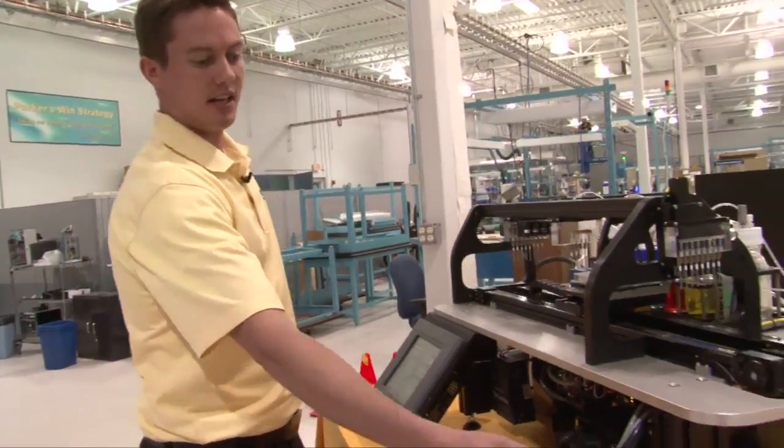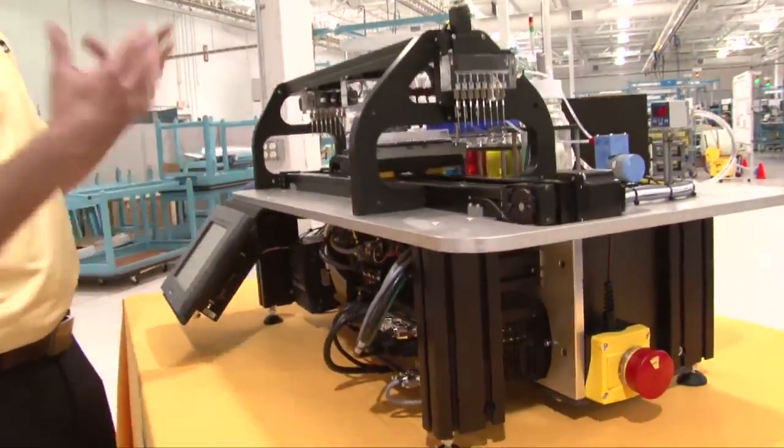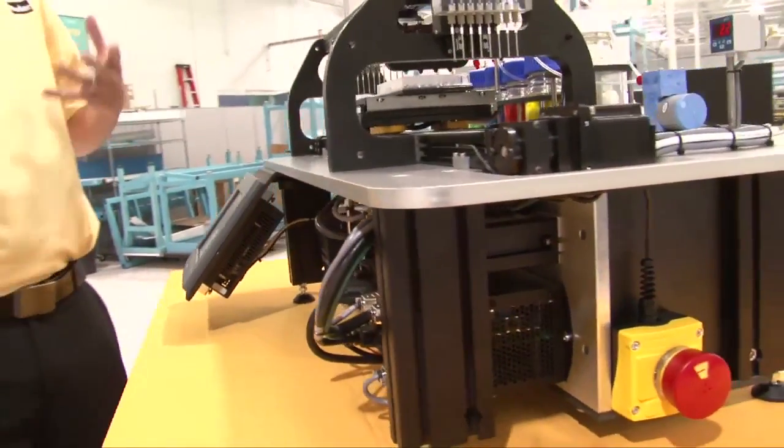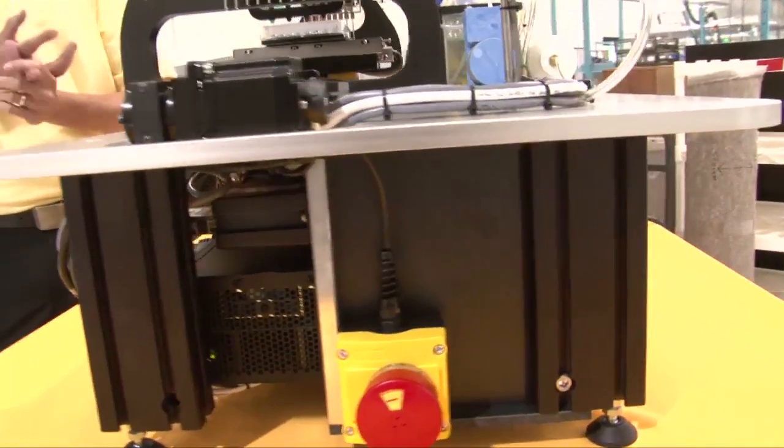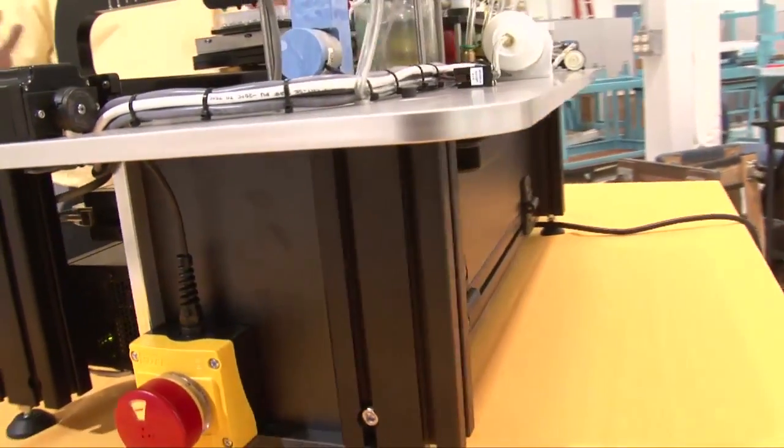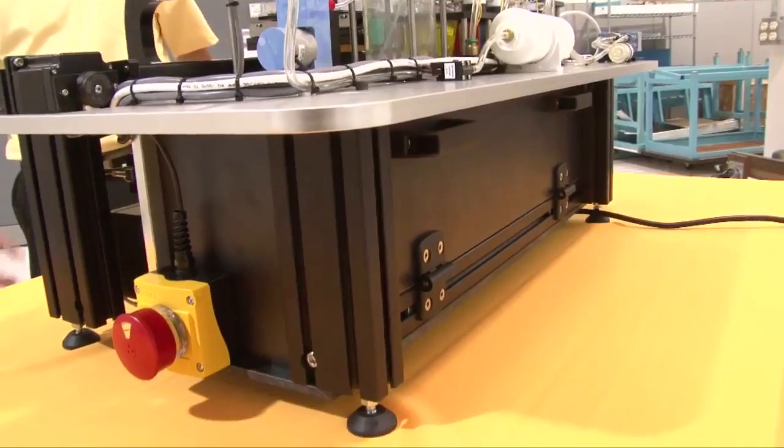And lastly, we have our IPS T-slot aluminum framing, the frame that the system is built on. This product is used for everything from machine guarding to lab automation tables. You can build clean rooms out of it. It's a very versatile product line, and it's what the machine base is built out of for this system.